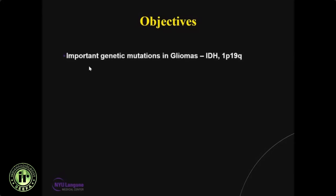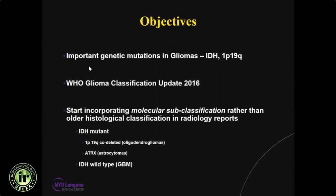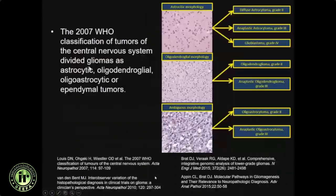The objectives of my talk: I'm going to discuss some of the important genetic mutations in gliomas — IDH and 1p19q. I'll talk about how the WHO glioma classification update 2016 should be used in our imaging reports, and how we can incorporate molecular information such as IDH and 1p19q status into our radiology reports.